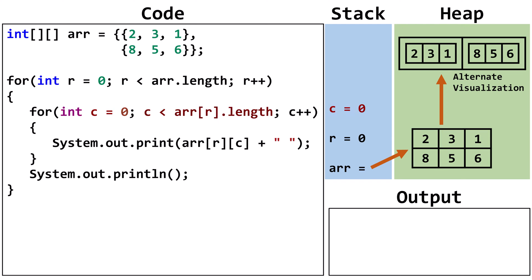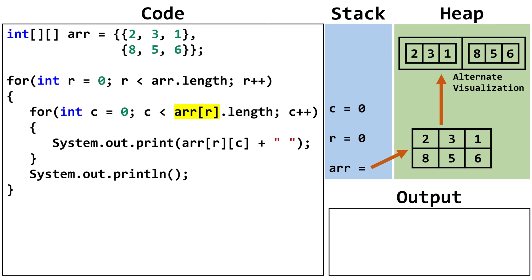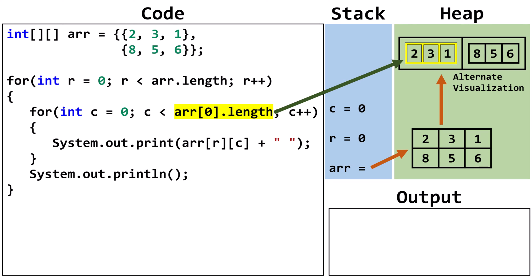Now we set C to 0. We check if C is less than arr[r].length. arr points to the outer 1D array. arr[r] means we are pointing at the element at index r. In this case, r is 0, so we are pointing at an inner array at index 0 of the outer array. We take the length of the inner array, which is 3. We could also say we are taking the length of row 0 of the 2D array. For our current array, we can think of this expression as C is less than 3. C is 0, so it evaluates to true.